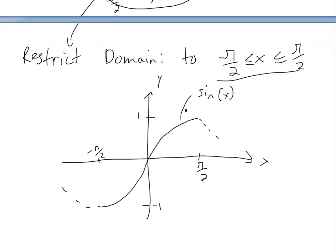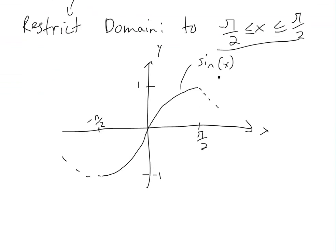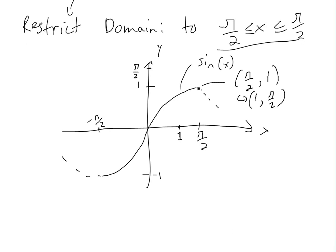Then if we do the inverse, all we do is switch every single point. So the point pi over 2 and 1 becomes 1 and pi over 2. Since pi is 3-point-something, it's gonna be greater than 1, so 1 would be somewhere here. The domain and range switch — you can see my inverse functions general video. So we switch the points: negative pi over 2 becomes something on the other axis.